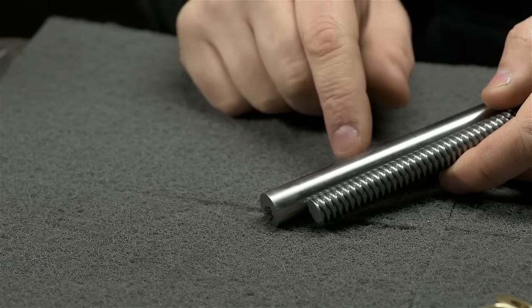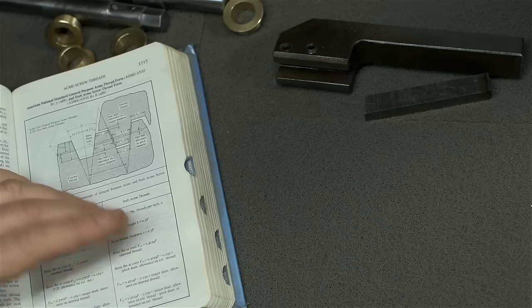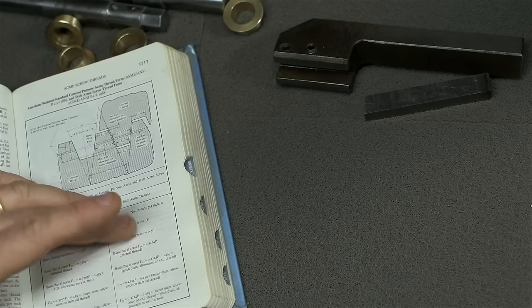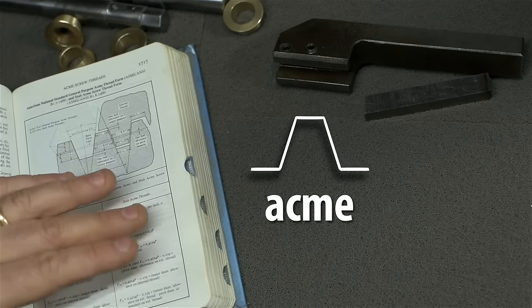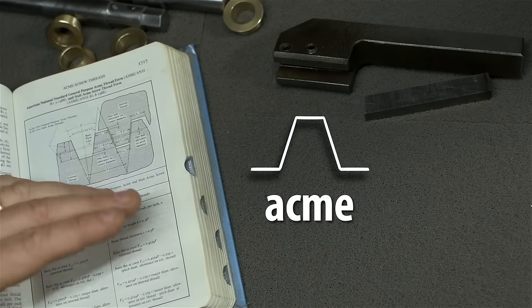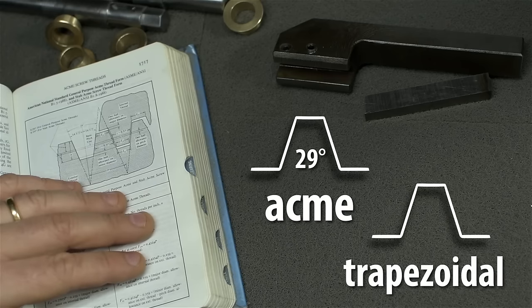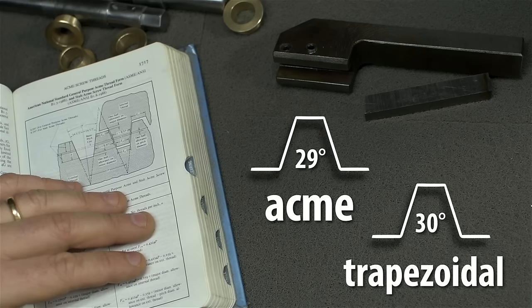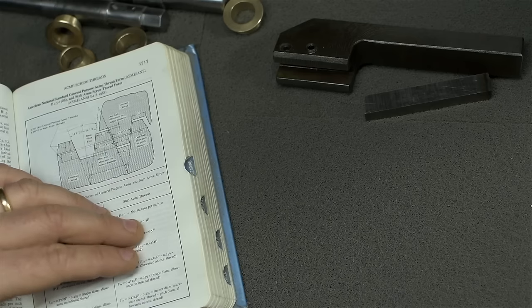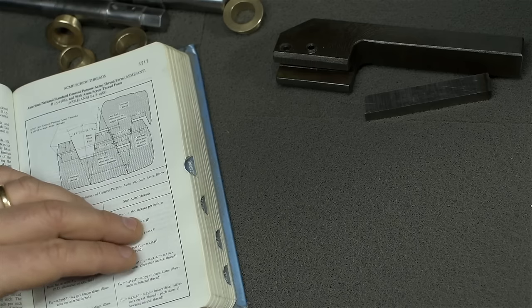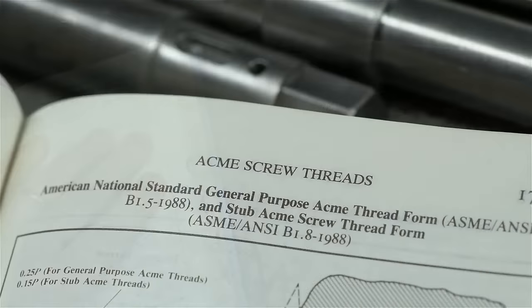Acme and trapezoidal threads - I'll admit it, I usually just call them all acme, but that isn't exactly accurate. The thread form is trapezoidal, but acme refers only to inch threads, imperial. They have an included angle of 29 degrees. The metric crowd calls acme trapezoidal by its thread form and it has a 30 degree included angle. As long as you know the dimensions, it doesn't really matter what you call them. I've got all the info I need right here in the machinery handbook.